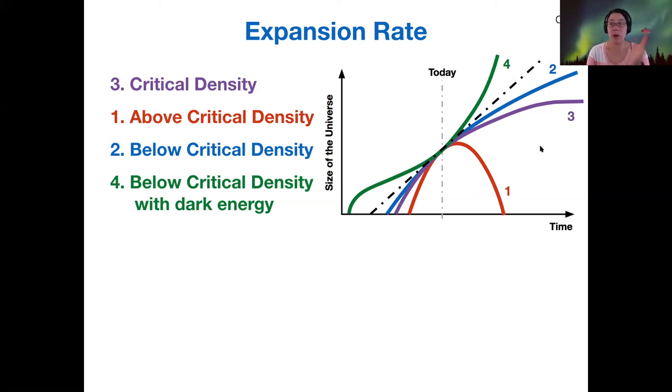There's many other possible curves. You can draw basically an infinite number of possibilities. And by measuring the expansion rate and the density, that is how we can choose between which one of these four curves is the most likely one for our own universe.